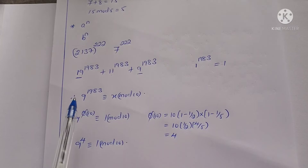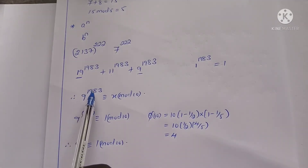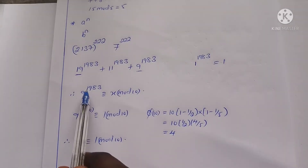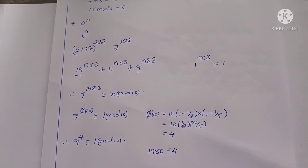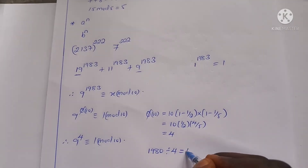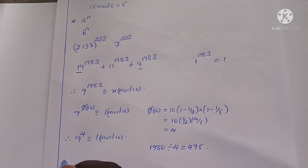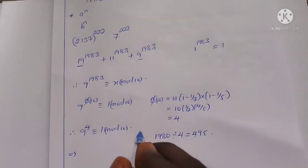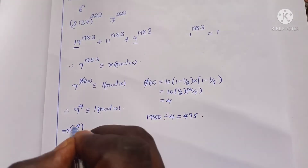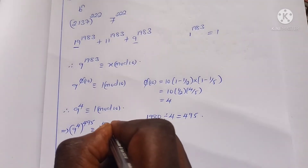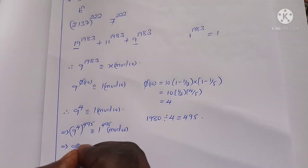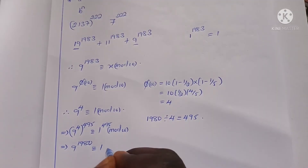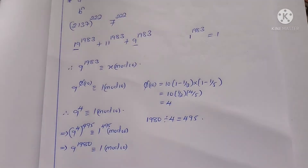We need to find the remainder when 9^1,983 is divided by 10. We find the largest multiple of 4 less than or equal to 1,983, which is 1,980 (since 1,980 ÷ 4 = 495). Raising both sides of 9^4 ≡ 1 (mod 10) to the power 495, we get 9^1,980 ≡ 1^495 ≡ 1 (mod 10).